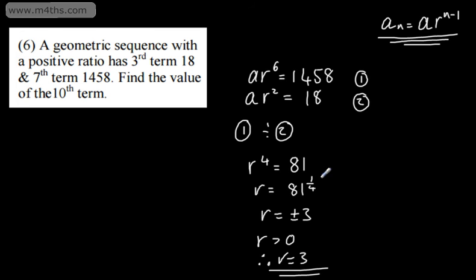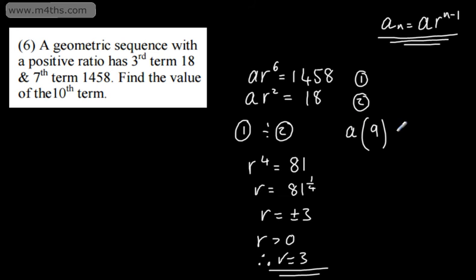At this stage you can simply keep multiplying by 3. Generally speaking though, we would substitute in to find a, especially if the question asks for it, and then use the formula. Using equation 2 and substituting in: a multiplied by the ratio squared — well 3 squared is 9 — equals 18. So a is 18 over 9, which is 2. So the first term a is 2 and the ratio r is 3.